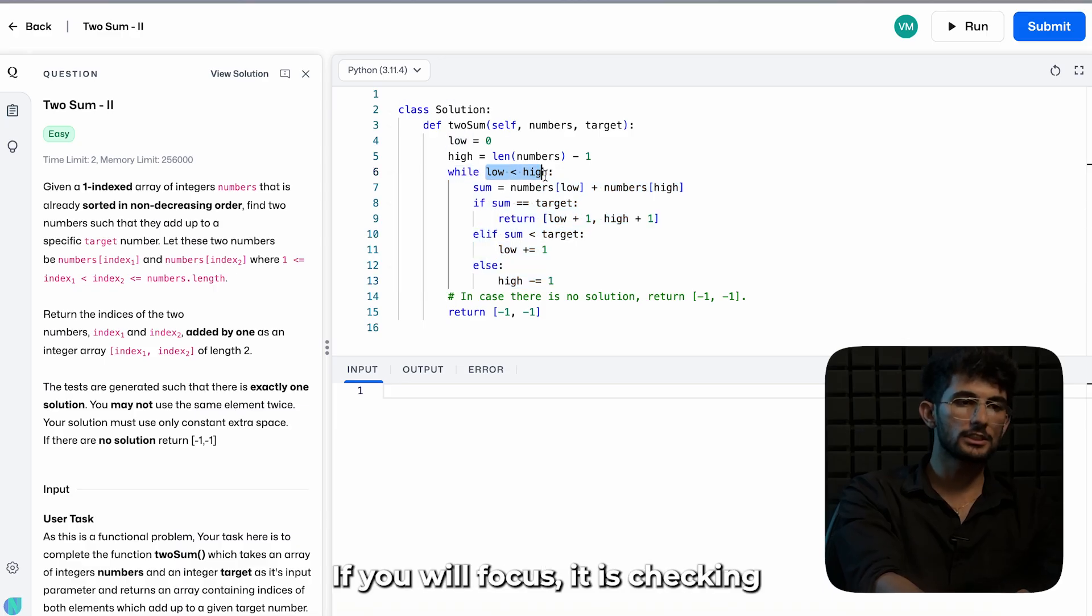Here if you will focus, it is checking if low is smaller than high. Why? Because if the high is greater than low, that means it is definitely crossing each other and they have not found any two numbers which were equivalent to target. So that's why they will return minus one comma minus one.